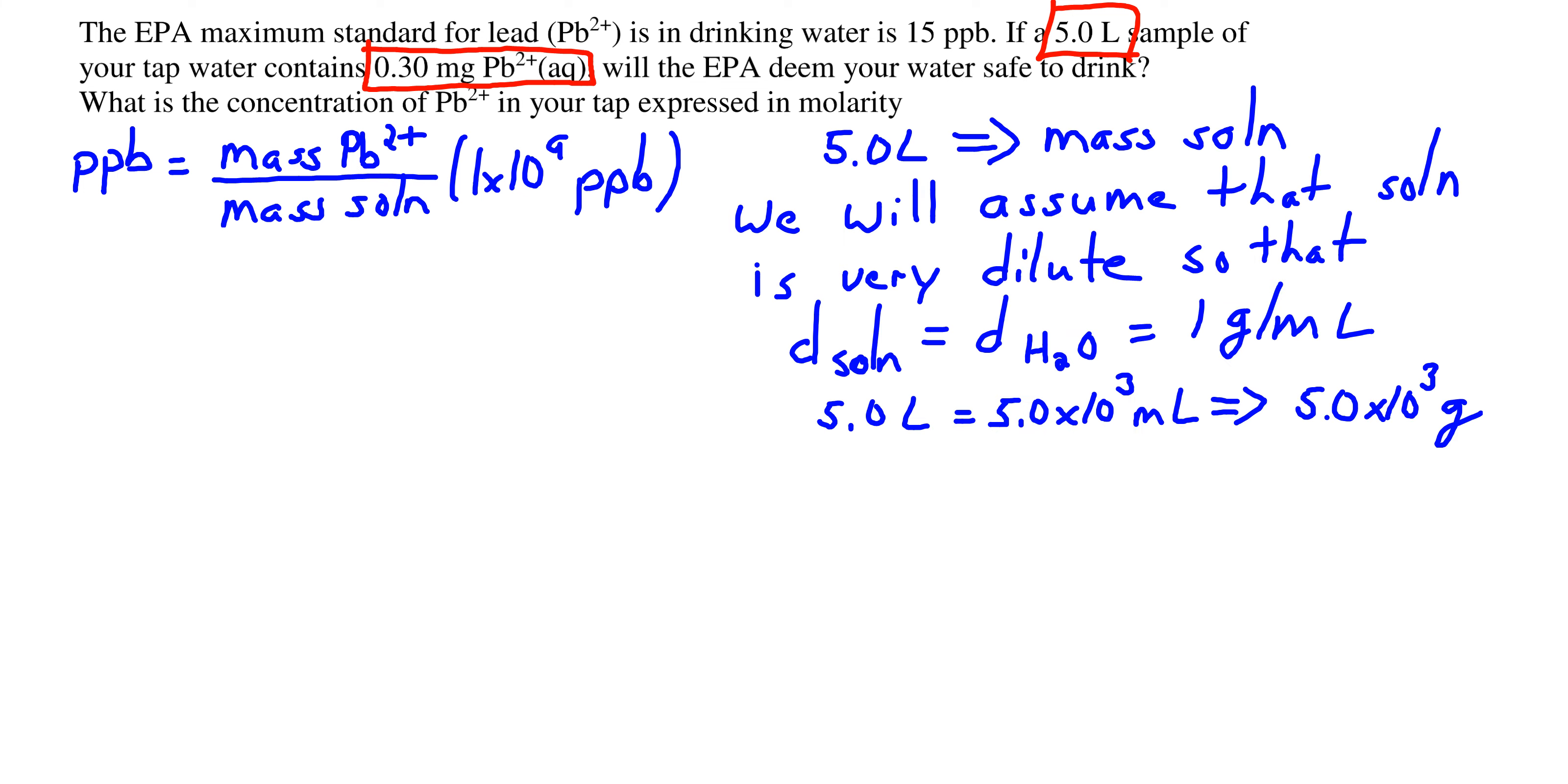What we're going to do here is consider our solution. It's a very dilute solution, otherwise we wouldn't be measuring things in parts per billion. So we want to convert our five liters to the mass of the solution, and we can just assume that the density of the solution is the same as that of water, and that's one gram per milliliter. So five liters, 5,000 milliliters, 5,000 grams.